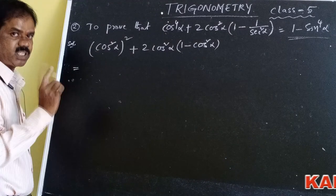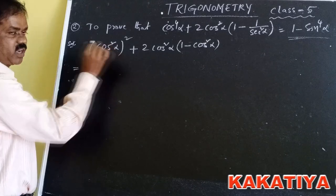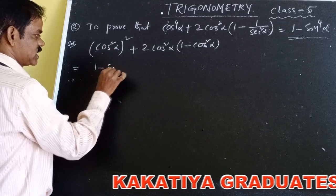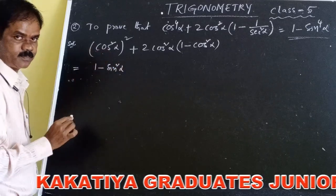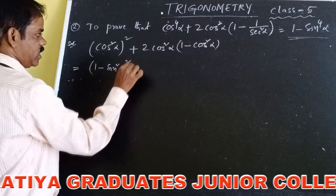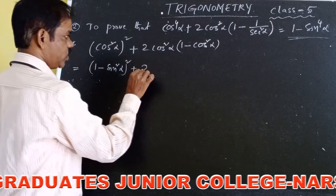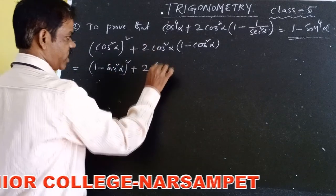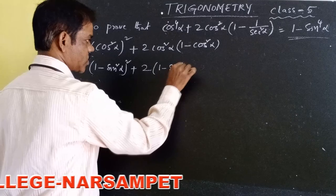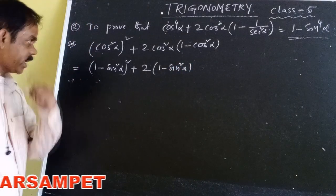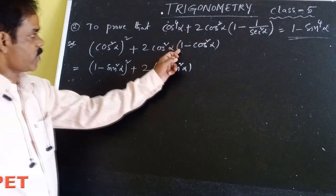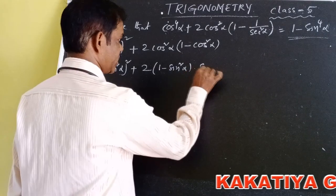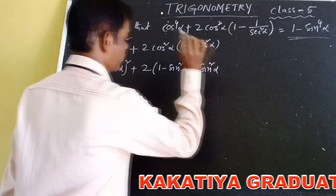Using the identity property, cos²α = 1 - sin²α. So we write (1 - sin²α)² + 2·(1 - sin²α)·(1 - cos²α). And since 1 - cos²α = sin²α, this becomes plus 2(1 - sin²α)·sin²α.